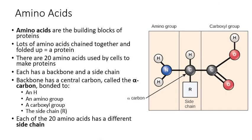We'll go through protein structure starting with their building blocks, which are the amino acids. To make a protein, you get a bunch of amino acids and link them together to make a chain, then fold that chain into a complex 3D shape — and then you have a functional protein. There are 20 different amino acids that cells use, and different proteins have different sequences of those 20 amino acids.